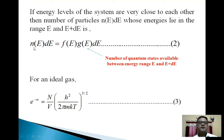These are number of particles. n(E)dE = f(E)*g(E)dE. Equation 2. This g(E)dE is number of quantum states available between energy range E and E+dE.